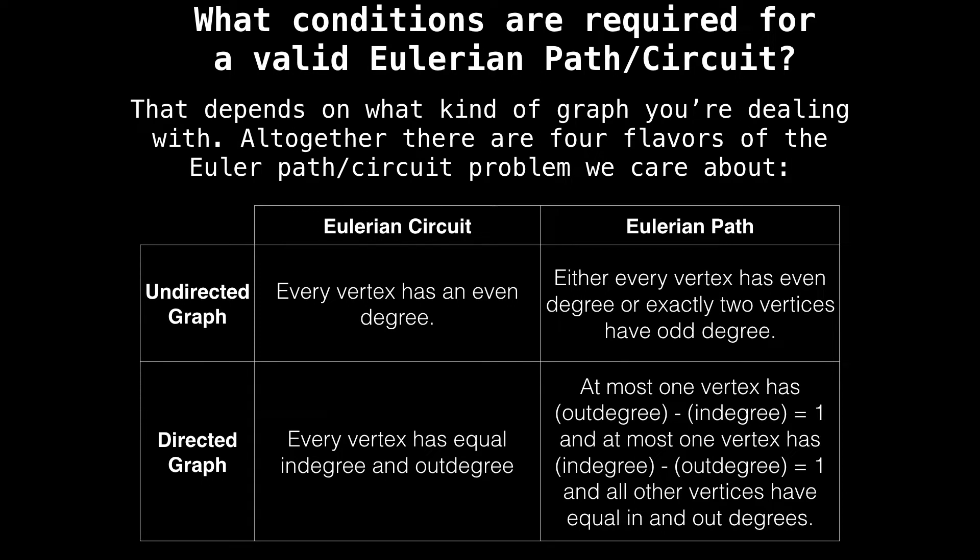Luckily for us, we don't have to guess whether or not a graph contains an Eulerian path or an Eulerian circuit. We can inspect the graph we're dealing with by counting the in and out degrees of each node to determine whether or not the graph meets one of the conditions in this table. There are four flavors of Eulerian paths and circuits that we care about, and those are whether the graph is directed or undirected and whether or not we want to find an Eulerian path or an Eulerian circuit. All of these variants talk about node degrees.